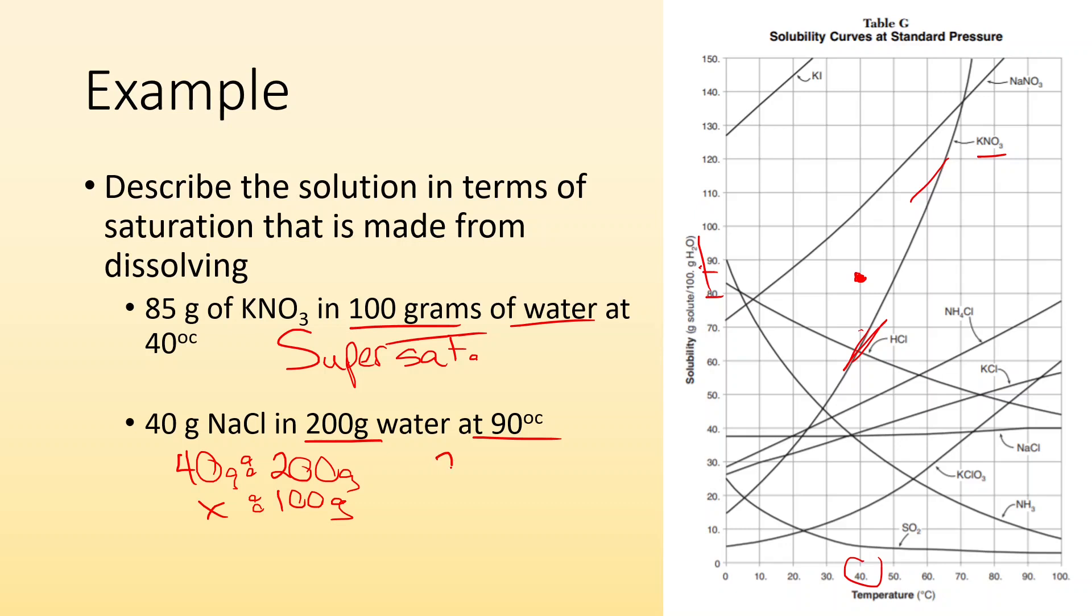So here it's the same as dissolving 20 grams of solute in a hundred grams of water. So, all right, 20 grams at 90 degrees Celsius is this point right here. Where is that compared to the sodium chloride line? It's underneath it. So that tells me that it is unsaturated.